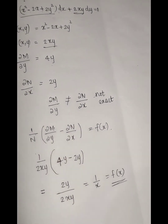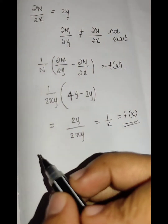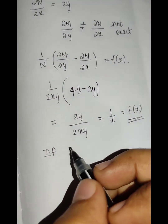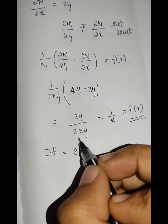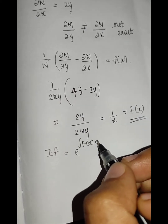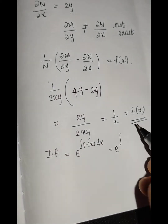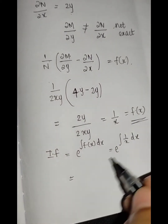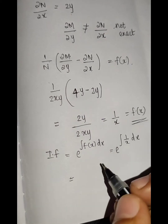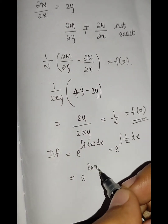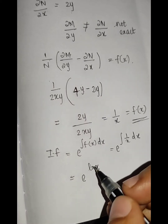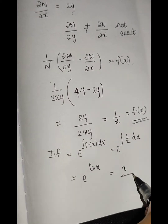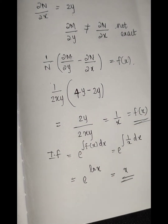We use the integrating factor in the first step. The integrating factor is e raised to the integral of 1/x dx, which equals e raised to log x. Since exponential and log cancel, the integrating factor is x.